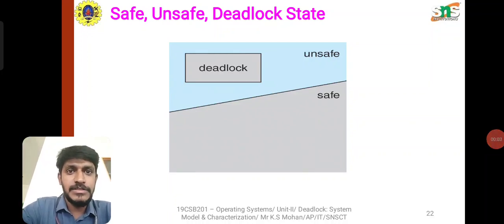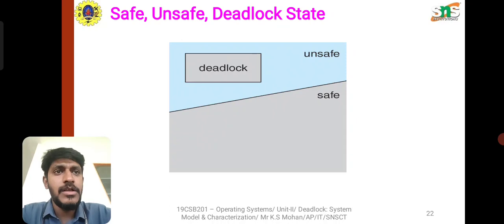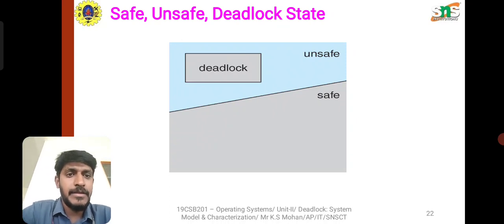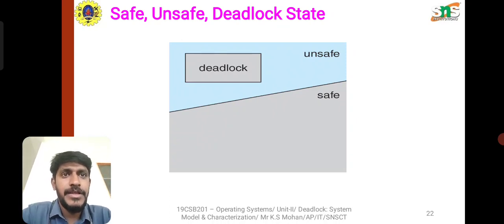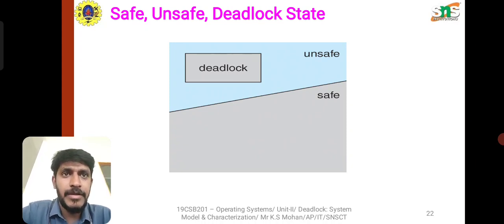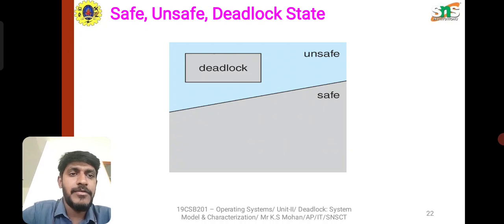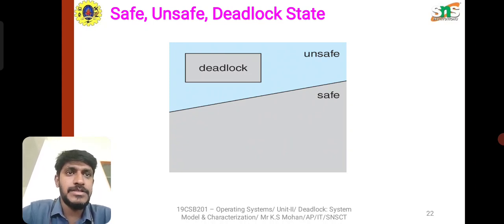Hello everyone, welcome to this lecture video on operating systems. We are in Unit 2, discussing deadlock and the introduction to deadlock avoidance from the previous video. In this lecture we are going to discuss safe and unsafe states and how deadlock can be avoided. The safe state is without deadlock, and with deadlock the process will be in the unsafe state.